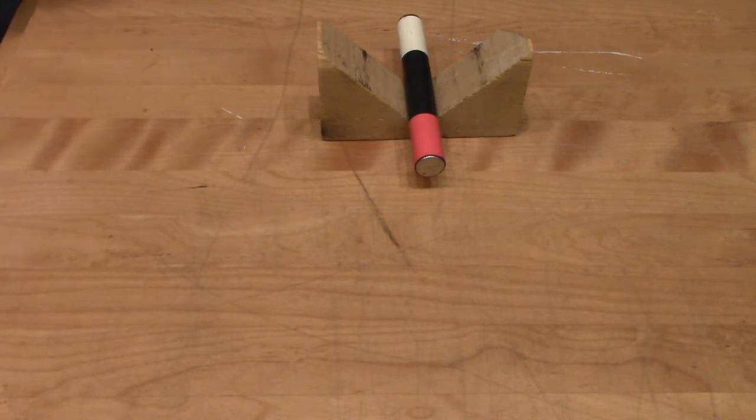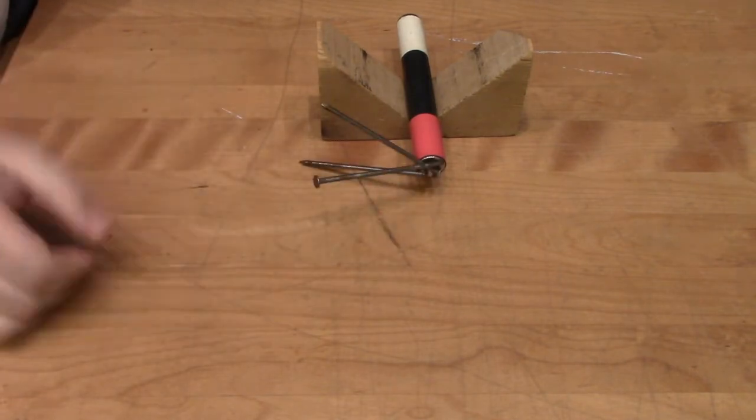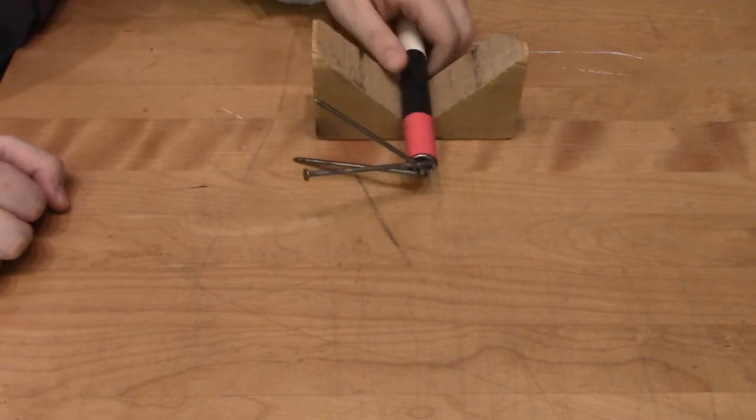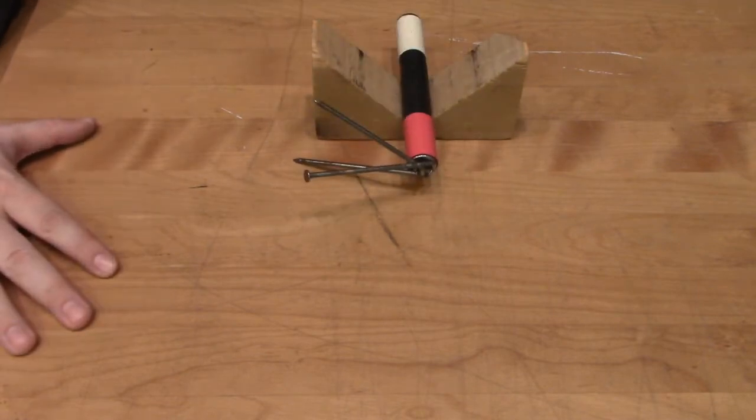Ferromagnetism is the easiest to demonstrate. Here are a bunch of steel nails. They are strongly attracted to magnetic fields.